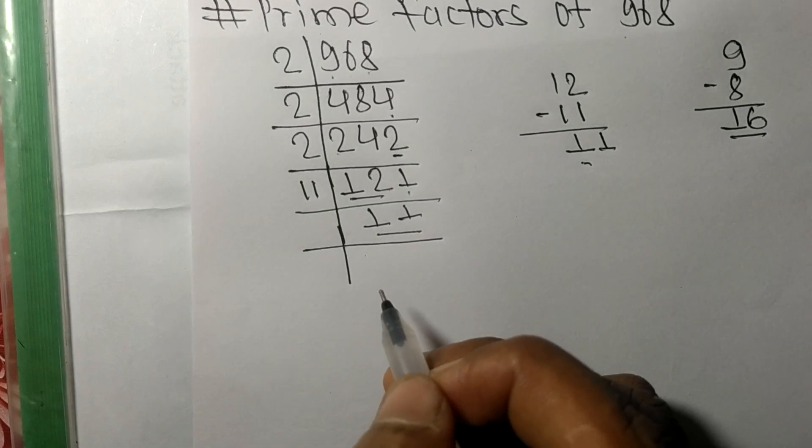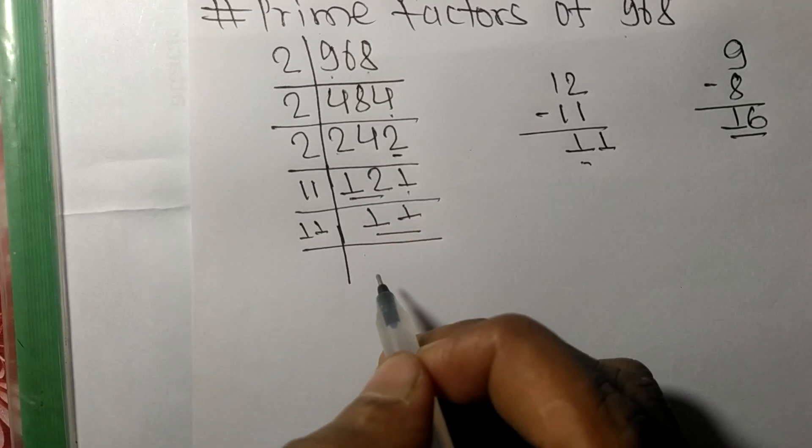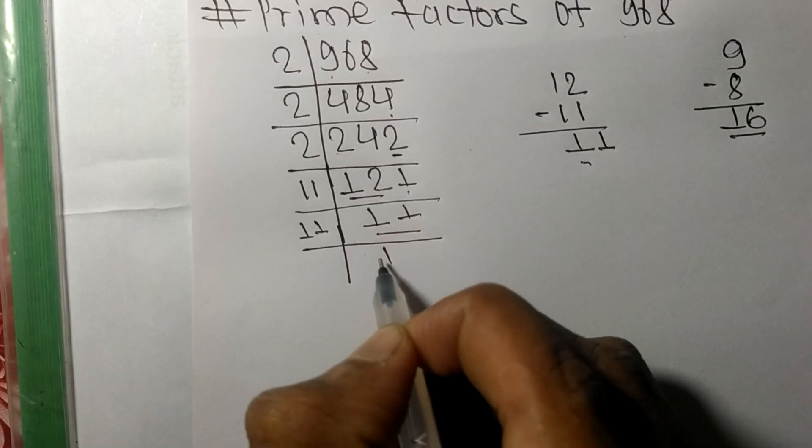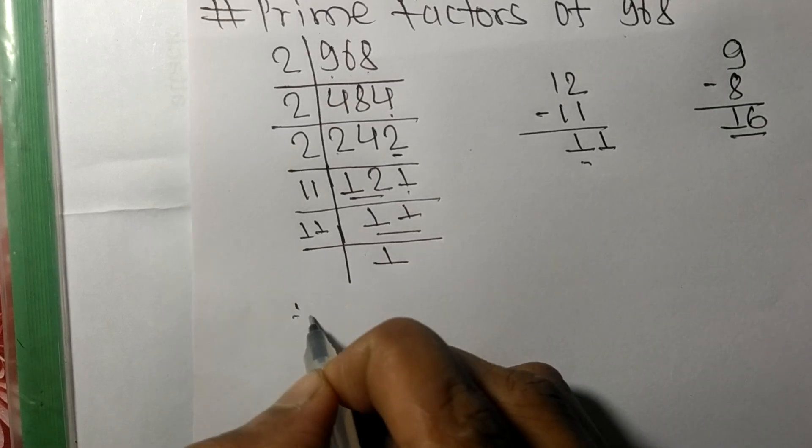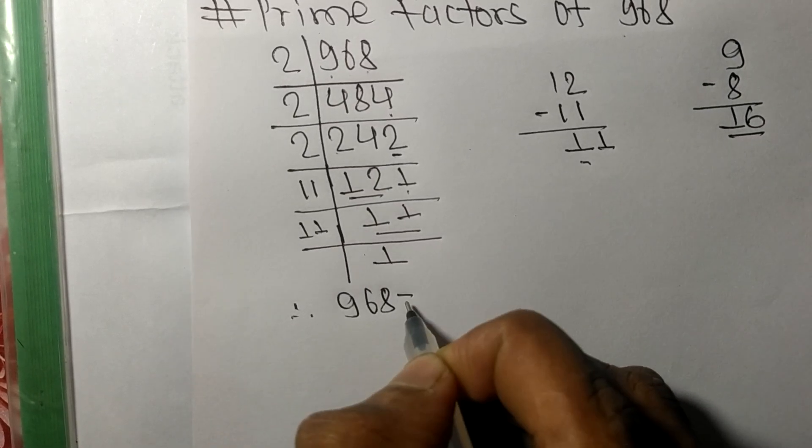11 which is a prime number, so it is exactly divisible by 11 only. And on dividing we get 1. Therefore 968 is equal to...